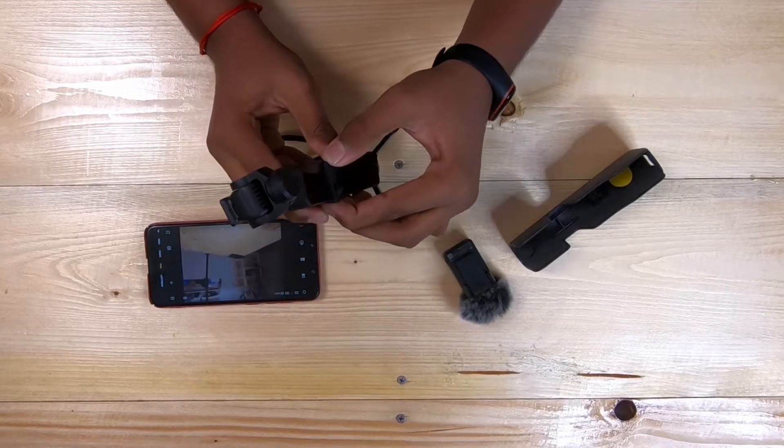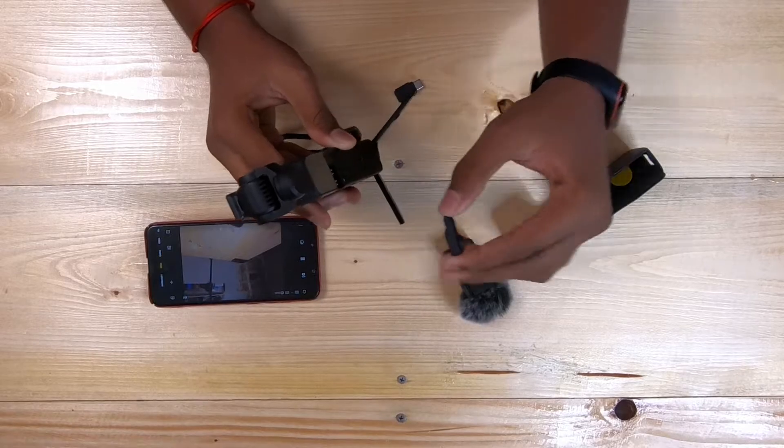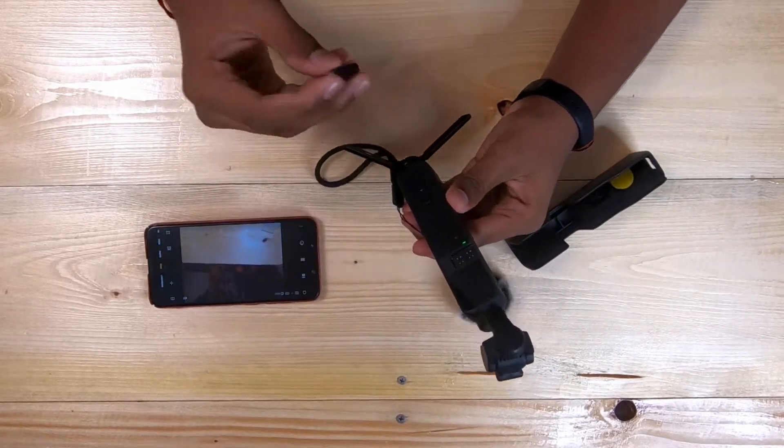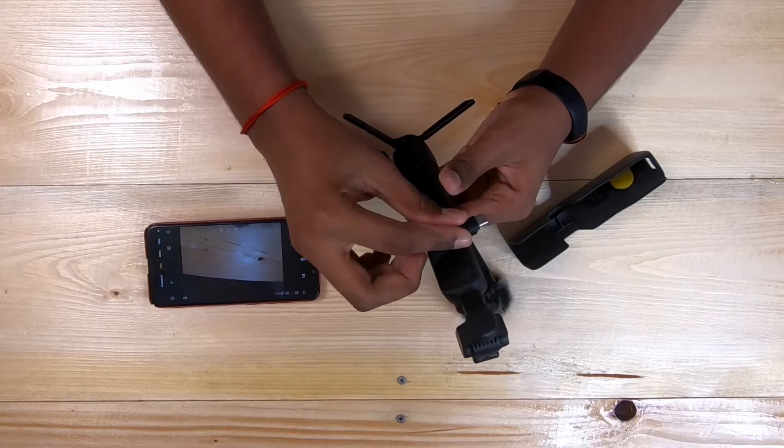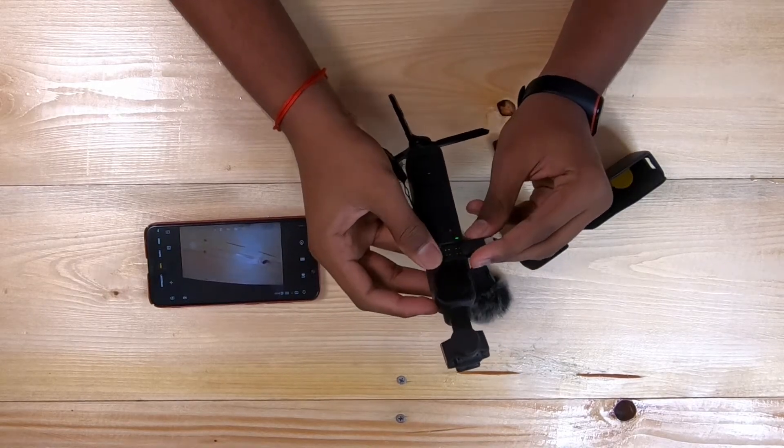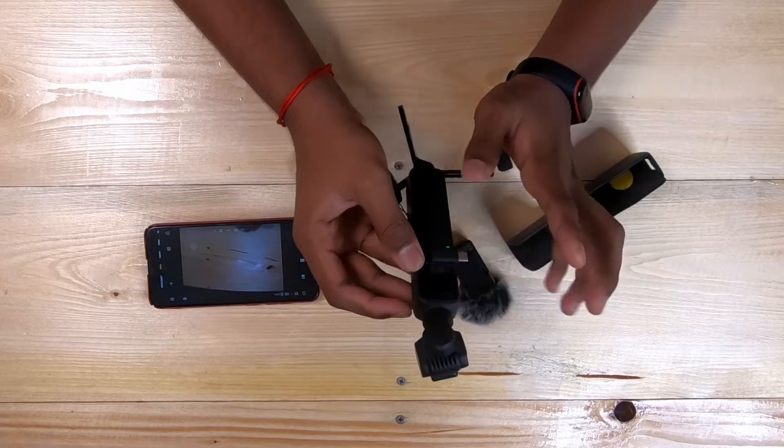Just take the joystick, pop it out, keep it aside, and then take the Type-C connector, keep it right there, and then insert it into the slot.